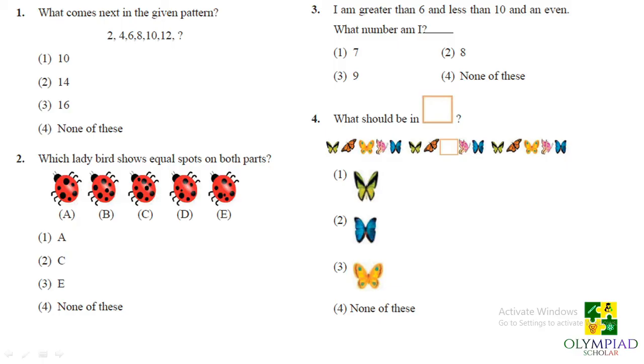So the first question, what comes next in the given pattern? See if we will closely observe the pattern 2, 4, 6, 8, 10, 12 then the second number is obtained by adding 2 to the previous number. So in this case if we will add 2 to the last number then we will get our answer which is 14.